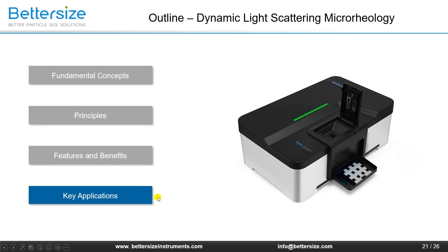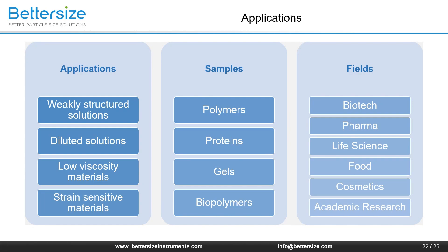Moving on to the key applications of DLS microrheology — we focus on applications where microrheology can make the biggest difference. When it comes to small sample volumes, non-contact measurements, high frequencies, or sensitivity, the benefits of microrheology can be significant. Examples include weakly structured solutions, dilute solutions, low viscosity materials, and strain-sensitive materials. As a complementary technique to classical mechanical rheology, most industries requiring rheological measurements can benefit. DLS microrheology is well-suited for polymers, proteins, gels, and biopolymers, with industries most interested in this technology being biotechnology, pharmaceuticals or life science, food, cosmetics, and academic research.